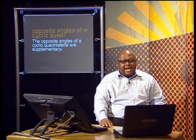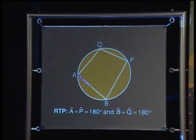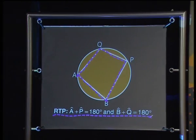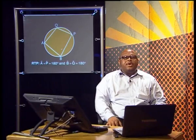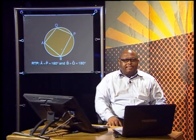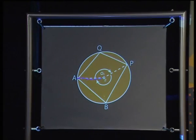To prove this theorem, we'll need a diagram — a circle containing a cyclic quadrilateral. Let's label it A, B, P, Q. So we need to prove that A plus P equals 180 degrees, and B plus Q equals 180 degrees. Construct the lines joining the center of the circle to A and P. We'll label the angles at O as O1 and O2.